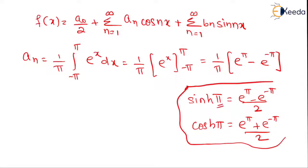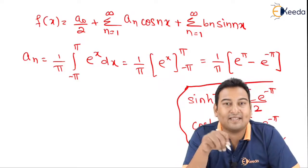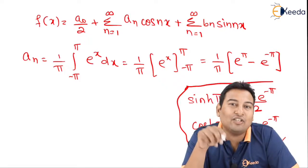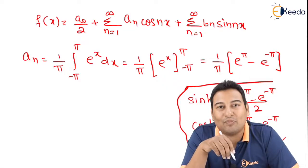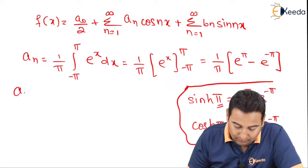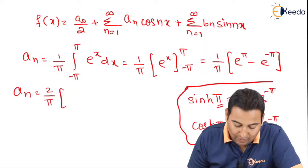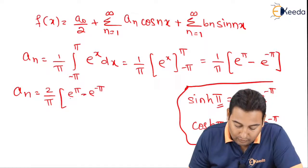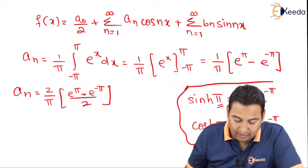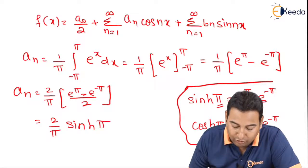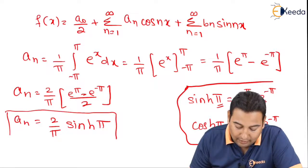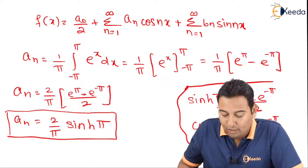In general, sinh(x) = (eˣ − e^(−x))/2 and cosh(x) = (eˣ + e^(−x))/2. We need to do an adjustment — multiplying and dividing by 2 — so that e^π − e^(−π) converts into 2·sinh(π). After adjustment, a₀ = (2/π)·sinh(π). This is the value of a₀. Let's move on and find aₙ and bₙ.